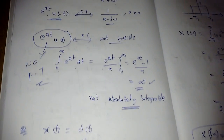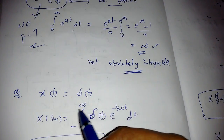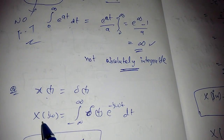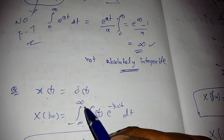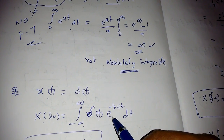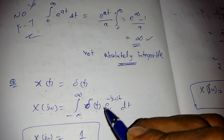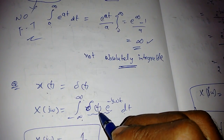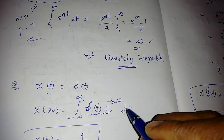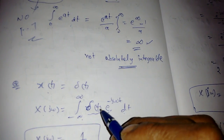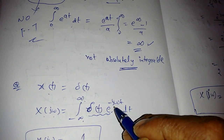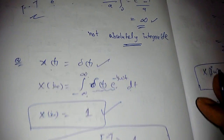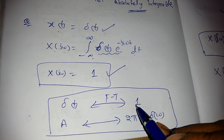Now, for the delta function: if x(t) = δ(t), then X(jω) = integral of δ(t)·e^(−jωt) dt. Using the sifting property of the delta function, δ(t − t₀)·x(t) evaluates to x(t₀). Here t₀ = 0, so e^(−jω·0) = e^0 = 1. Therefore, the Fourier transform of δ(t) is 1.